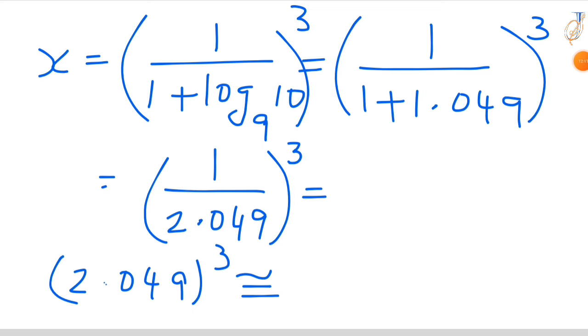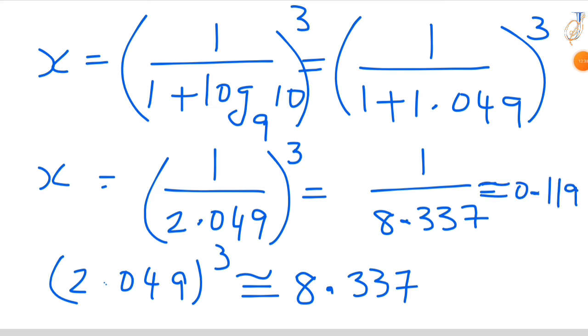2.049 cube is nearly the value 8 point something. That is 8.337. So the x value is 1 by 8.337. If you do calculation, this x value is nearly equal to 0.1199. That is the x value.